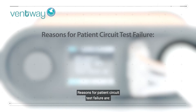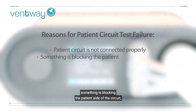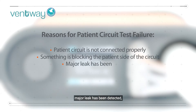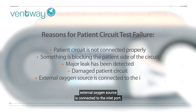Reasons for patient circuit test failure are: the patient circuit is not connected properly, something is blocking the patient side of the circuit, a major leak has been detected, a damaged patient circuit, or an external oxygen source is connected to the inlet port.